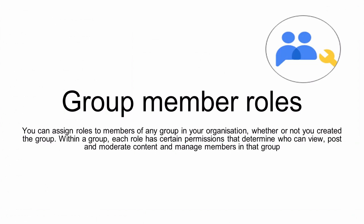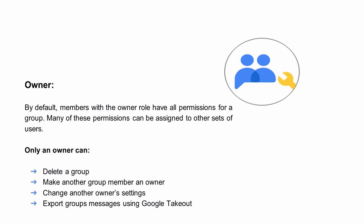Now I'm going to talk about group member roles. You can assign roles to members of any group in your organization, whether or not you created the group. Within the group, each role has certain permissions to determine who can view, post, and moderate content and manage members. By default, members with the owner role have all permissions for a group. Many of these permissions can be assigned to other sets of users. Only an owner can delete a group, make another group member an owner, change another owner's settings, or export group messages using Google Takeout. Only group owners and managers can change a group's settings. If you're signed into a work or school account, an administrator can remove some owner permissions but not others.